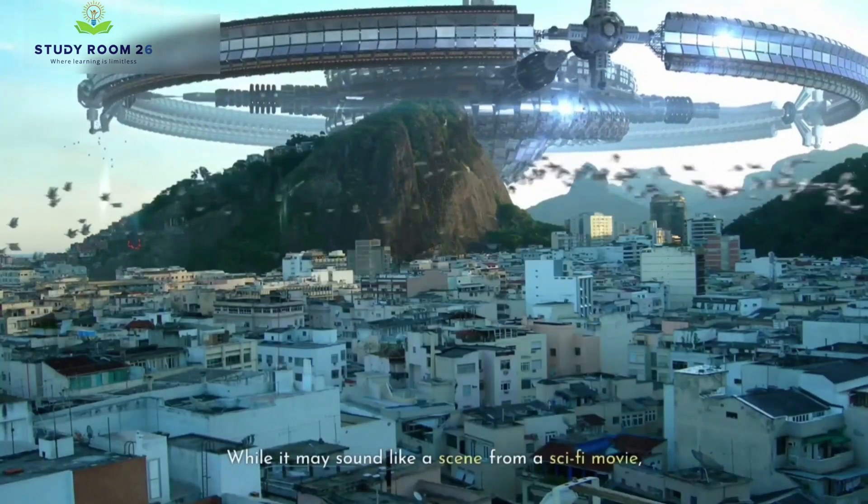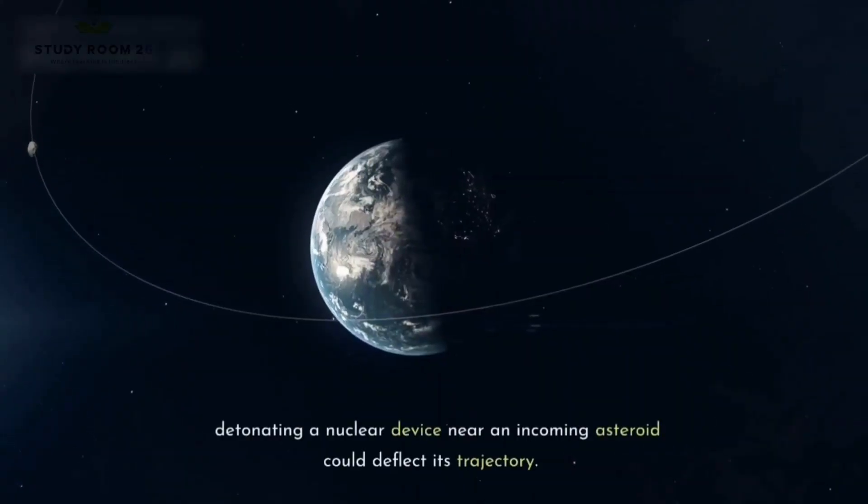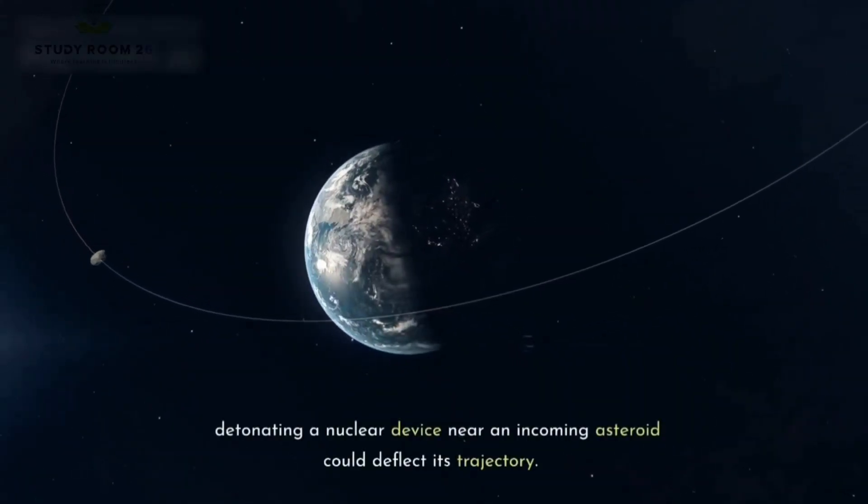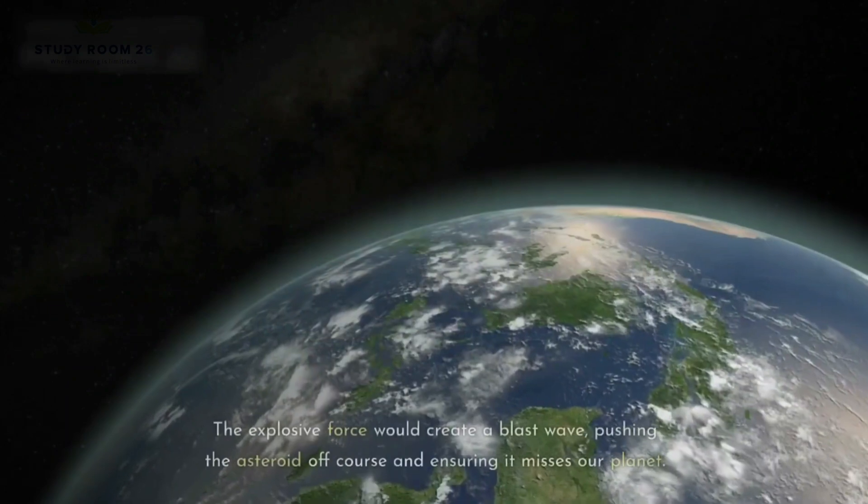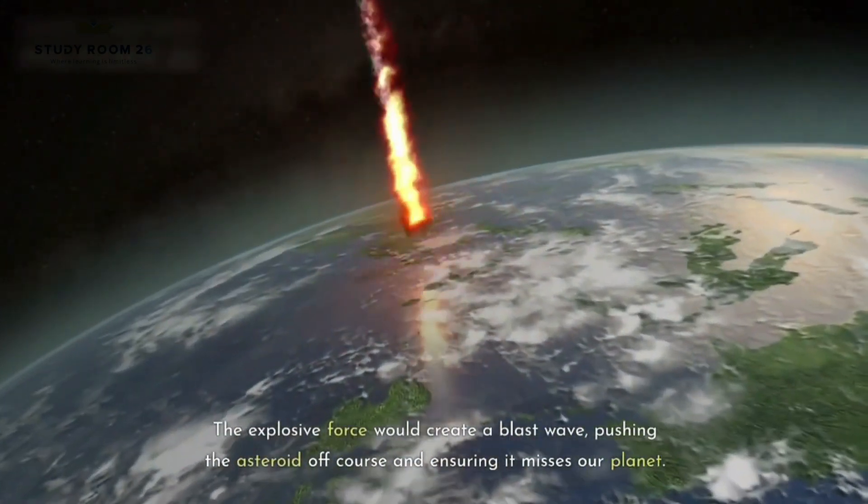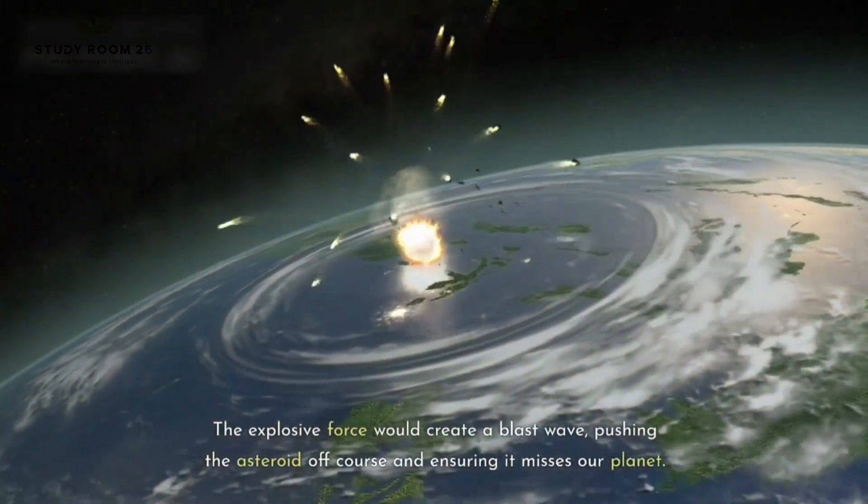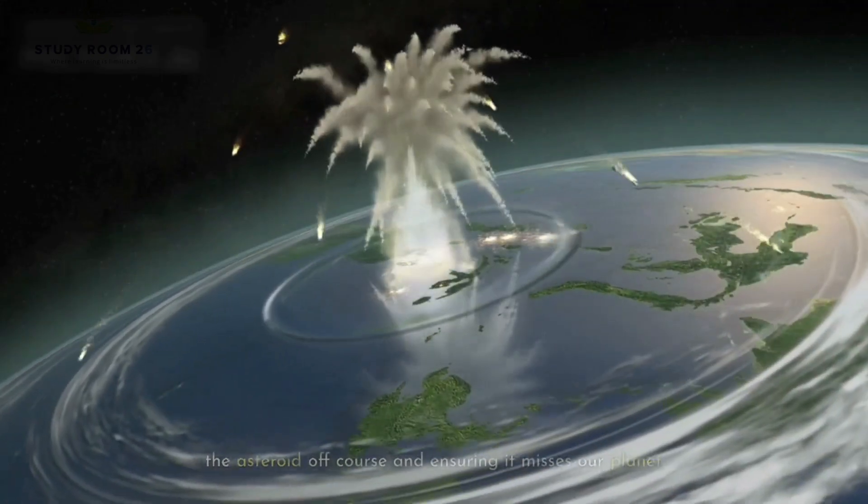While it may sound like a scene from a sci-fi movie, detonating a nuclear device near an incoming asteroid could deflect its trajectory. The explosive force would create a blast wave, pushing the asteroid off course and ensuring it misses our planet.